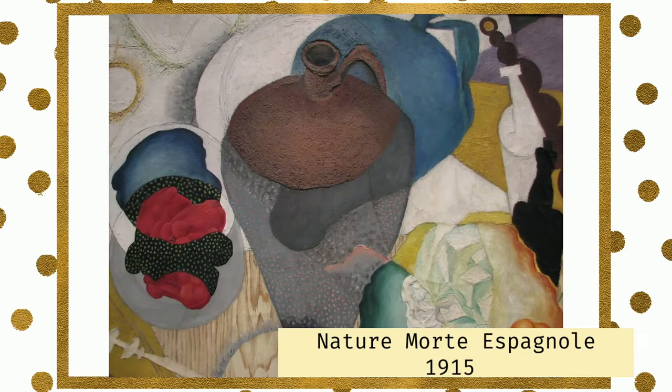In Nature Morte Española, Rivera painted thickly at the mouth of the jug to imitate real clay and make it seem like water could be poured through the opening. This picture was his early experiment of Cubism.